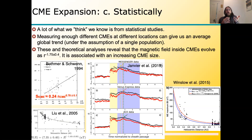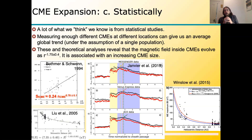Problematically for planetary missions like Venus Express and Mercury, we don't have plasma measurements — we can only get magnetic field strength. What we find is that the rate of size increase is again around r to the 0.8, whereas the rate of decrease of the magnetic field is steeper than expected, about r to the minus 1.8, which is a typical value.